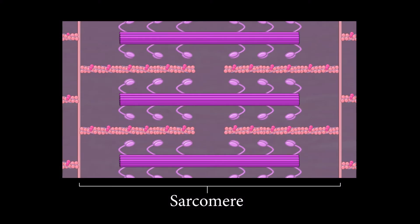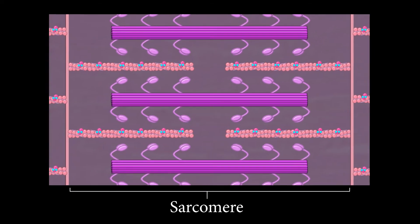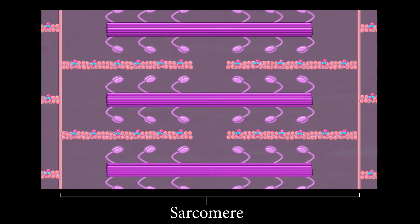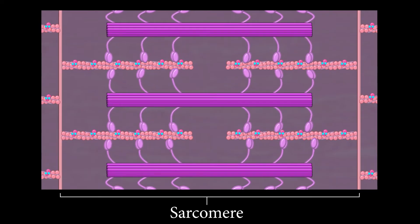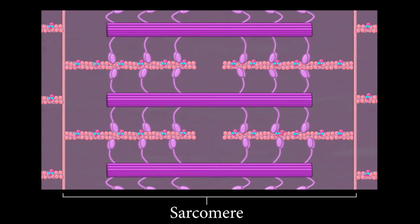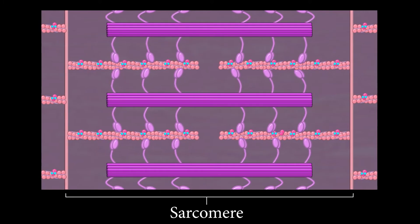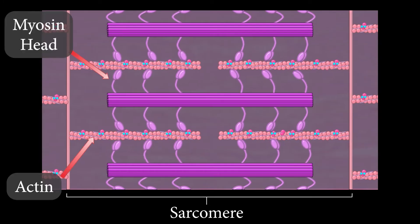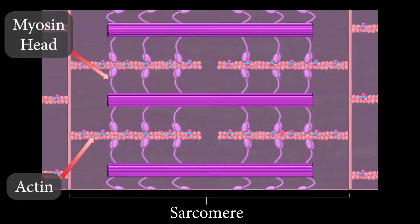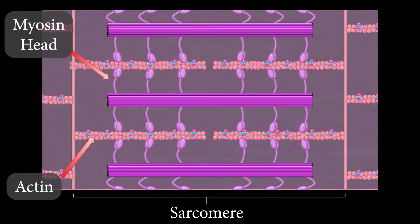So how does the structure of a muscle allow for the muscle to contract? To find out, let's zoom in on a sarcomere and see what's going on. The way that muscles contract is by shortening the sarcomeres that make up each myofibril. This is accomplished when myosin heads pull on actin filaments.